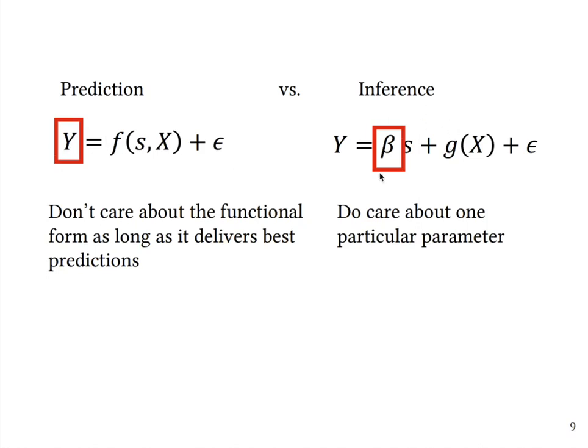For inference we actually do care about one particular parameter. In our case it's the parameter in front of the years of schooling, it's parameter beta.